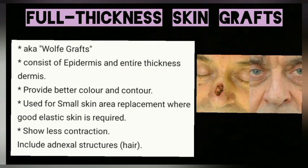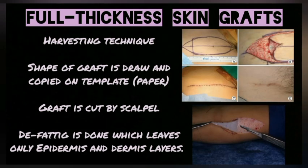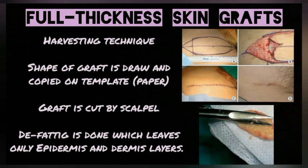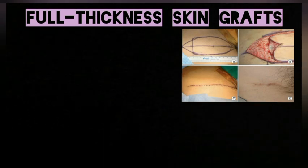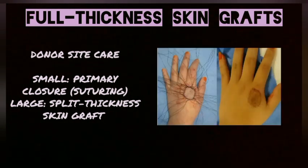Due to their small size, full thickness grafts show less contraction. Donor sites can include the arms, groin area, front or back of the ear, scalp, or above the collar bone. To harvest the graft, a template is prepared by drawing the shape and copying it on paper, then a scalpel is used to cut the graft. Defatting is then performed to remove the fat layer, leaving only epidermis and dermis. The deep wound at the donor site is closed by primary closure (suturing) or by using a split thickness skin graft.